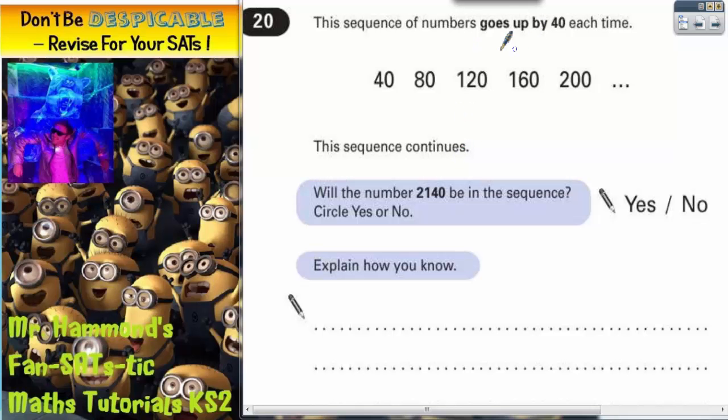So what we've got to do is go up in a bigger jump of 40s. So for example, if it's going up in 40s, I know that 10 steps, 10 lots of 40, if I go up 10 times, it would be 400.